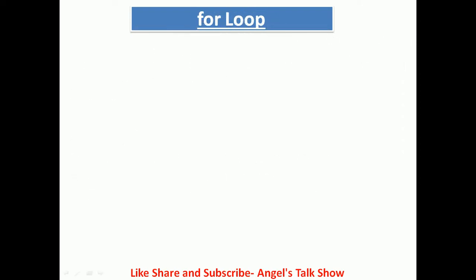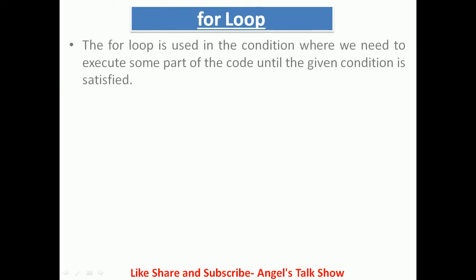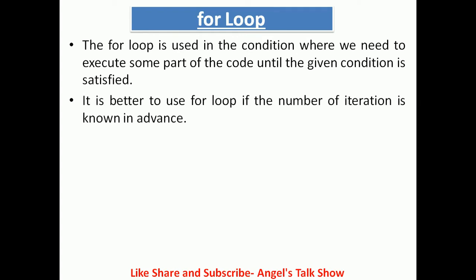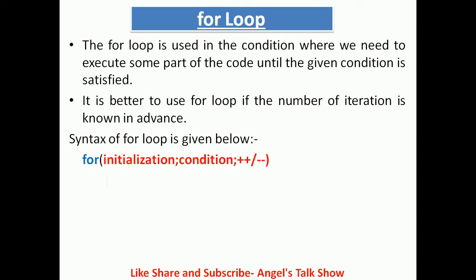Now we will discuss all three loops one by one. The first is the for loop. The for loop is used in conditions where we need to execute some part of the code until the given condition is satisfied. It is better to use the for loop if the number of iterations is known in advance. The syntax of the for loop is given below.